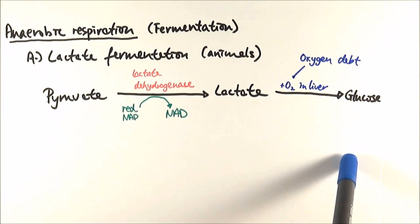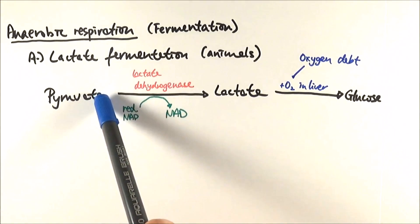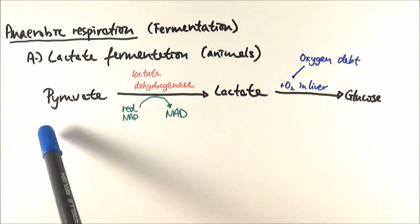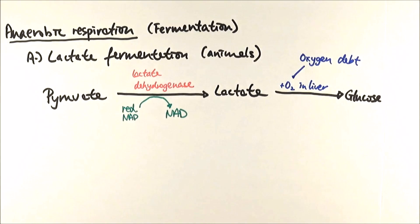And in the liver, it reacts with the oxygen to regenerate glucose, basically. Glucose can then undergo glycolysis again to regenerate pyruvate. And if we have enough oxygen at that point, it will go off to do the normal aerobic respiration.